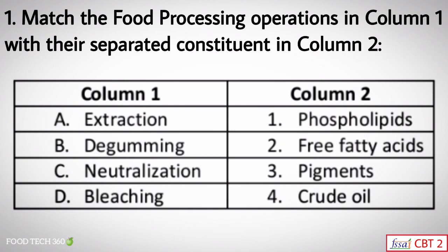Question number one: match the food processing operations in column one with their separated constituent in column two. Column one contains food processing operations such as extraction, de-gumming, neutralization, and bleaching. Column two contains phospholipids, free fatty acids, pigments, and crude oil.